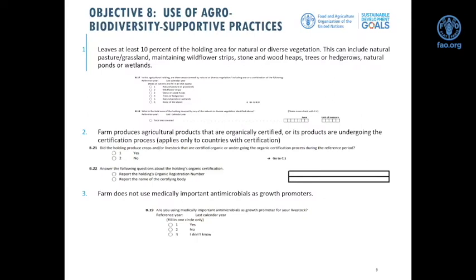The sustainability criteria are: at least two out of five practices for countries without organic certification, and three out of six for countries with organic certification. If the agricultural holding meets this threshold, the agricultural area is sustainable. If only one out of five, or two out of six with organic certification, the sustainability status is acceptable. If fewer than two biodiversity-supportive practices are met, the agricultural area is unsustainable.